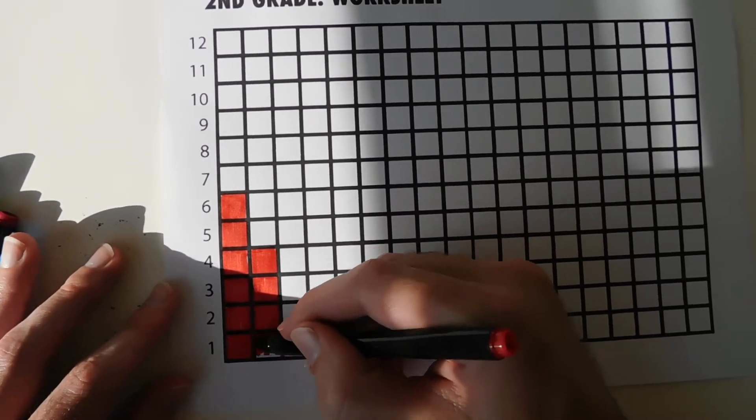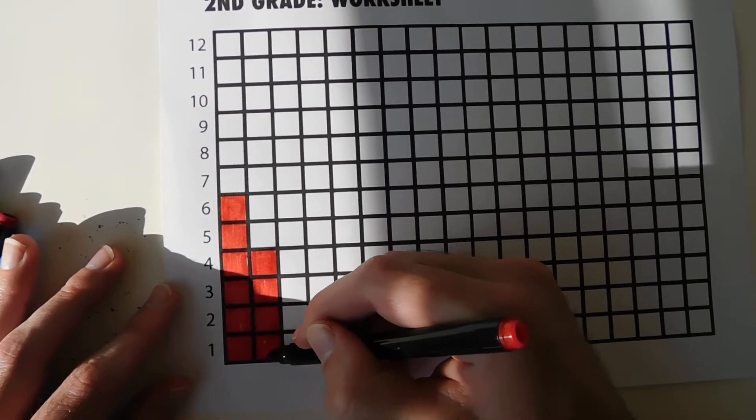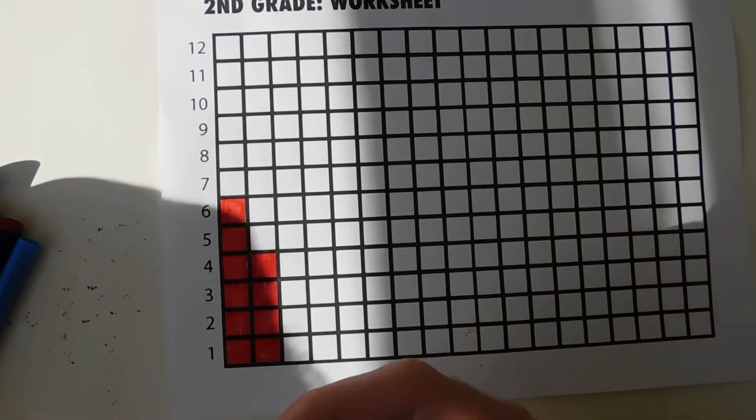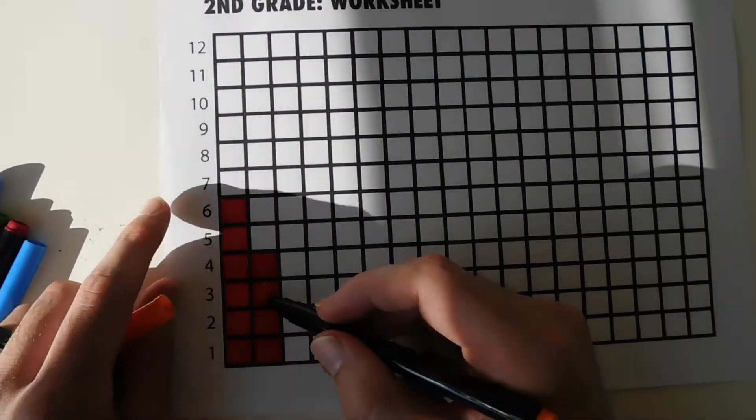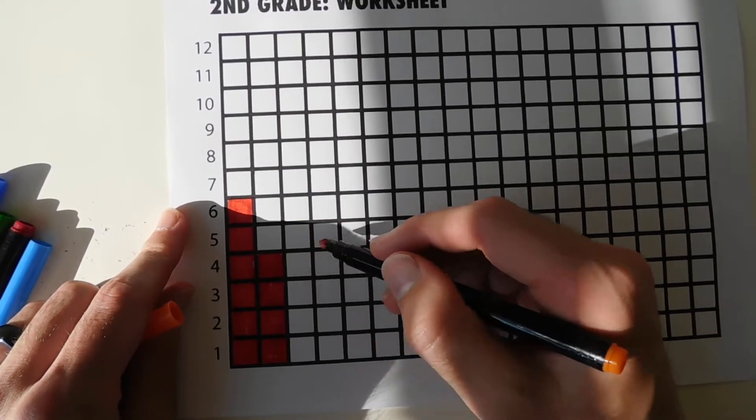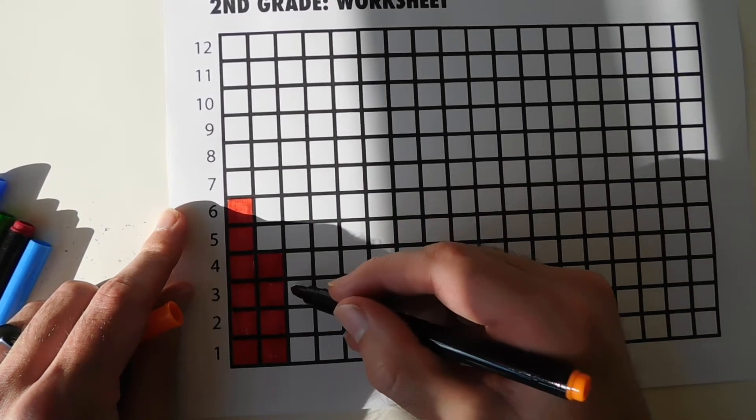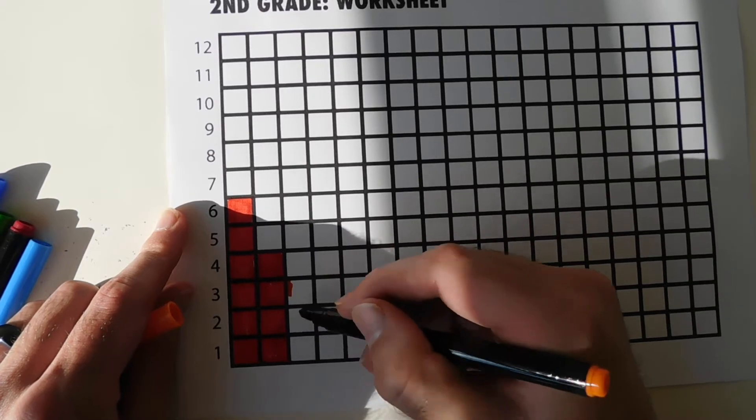Now I'm doing all the colors of the rainbow, so I've already done red. The next color in the rainbow is orange, red, orange. I'm going to do two orange just like I did with the red, different heights. I'll make the first one 3. 1, 2, 3.